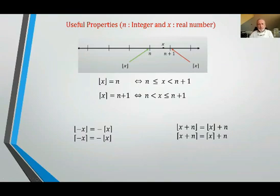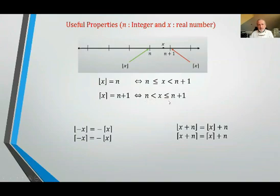Properties: if n is an integer and x is a real number with x between n and n plus 1, then n is the floor of x and n plus 1 is the ceiling of x. The floor of x equals n if and only if n is less than or equal to x and less than n plus 1. Also, the floor of negative x equals the negative ceiling of x, and the ceiling of negative x equals the negative floor of x.